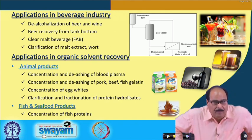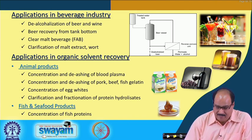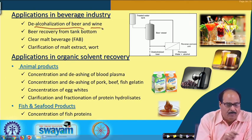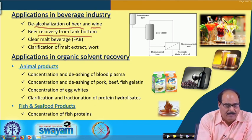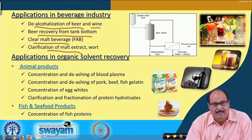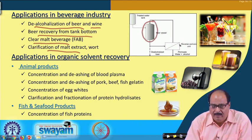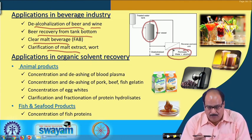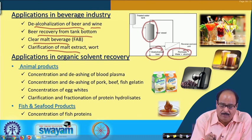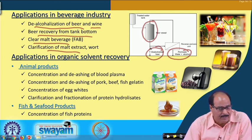In the beverage industry, particularly in alcoholic drink manufacturing, membrane technology can be used for de-alcoholization of beer and wine, beer recovery from tank bottoms, and clarification of malt extract. Beer is passed through a membrane — typically an RO unit — which allows only alcohol and water to pass through, and the de-alcoholized beer or wine can be obtained. Alcohol can then be further separated from the water.